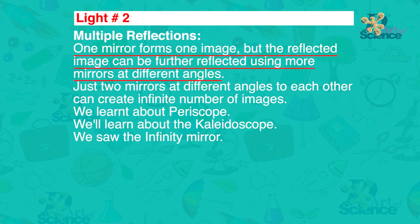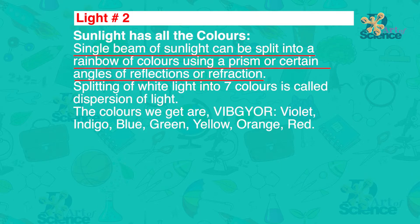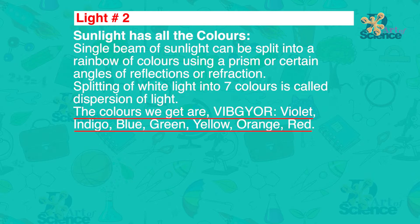Multiple reflections. One mirror forms one image, but the reflected image can be further reflected using more mirrors at different angles. Just two mirrors at various different angles to each other can create infinite number of images. Then we learnt about the periscope, we learnt how to make the kaleidoscope and we also saw the infinity mirror. Sunlight has all the colors. A single beam of sunlight can be split into a rainbow of colors using a prism or using reflection and refraction. Splitting a white light into 7 colors is called dispersion of light. The colors we get are in the sequence of vibgeor, which is violet, indigo, blue, green, yellow, orange and red.